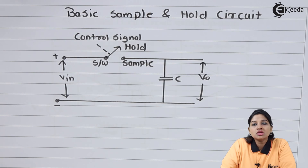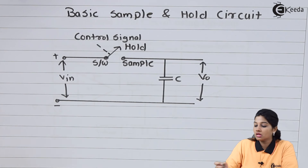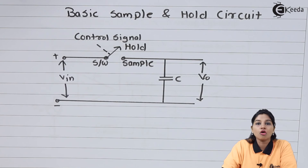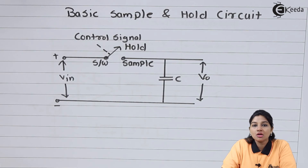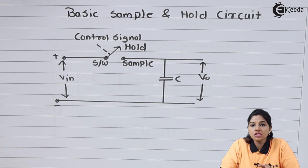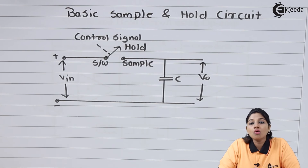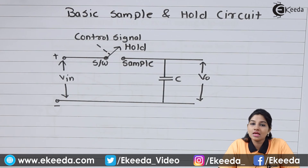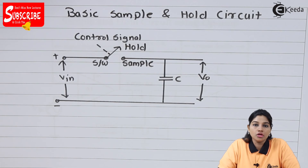When the switch is opened by using a control voltage, the capacitor is now disconnected from input voltage VIN. Therefore, there is no path for the capacitor to get discharged. Because of this, the capacitor will now hold the value of voltage across it until the next sampling cycle. This is how the opening and closing of the switch decides the sampling and holding process.